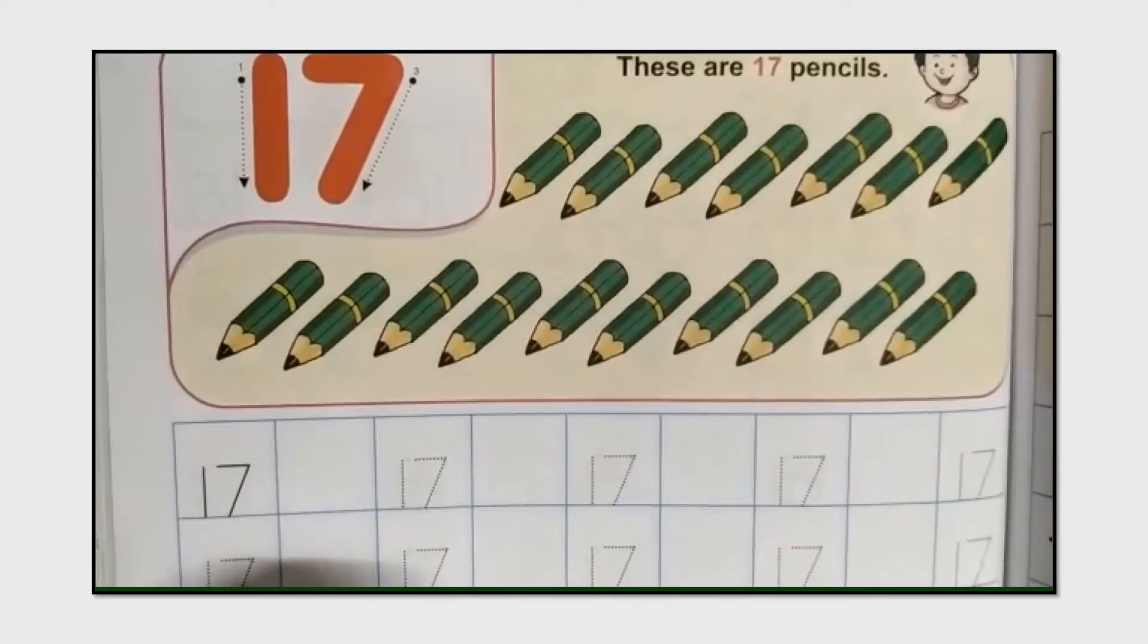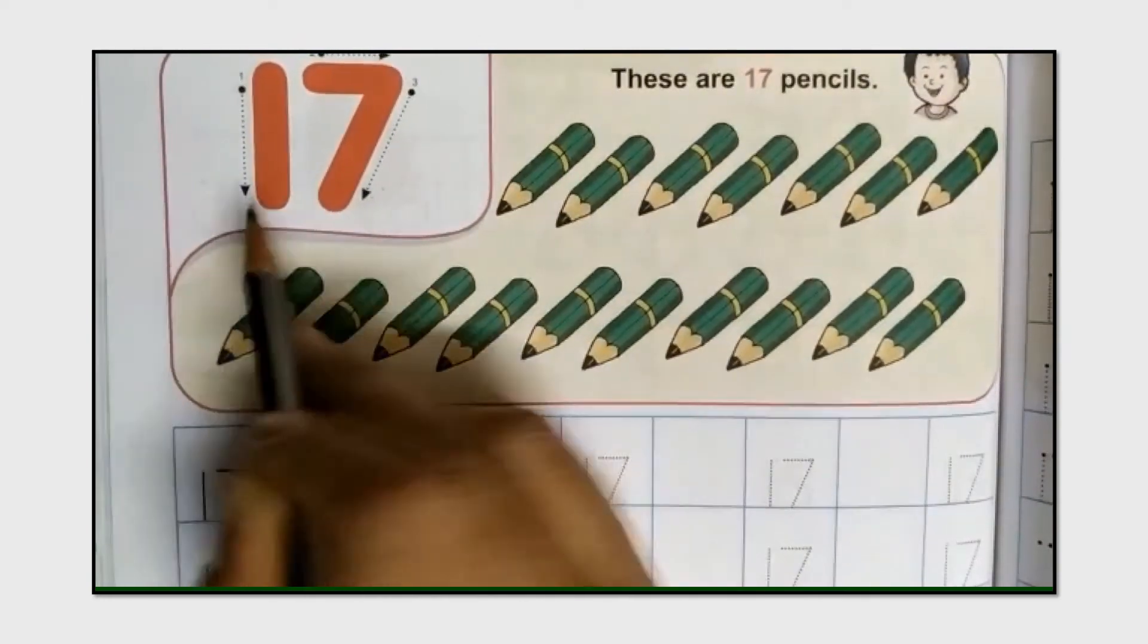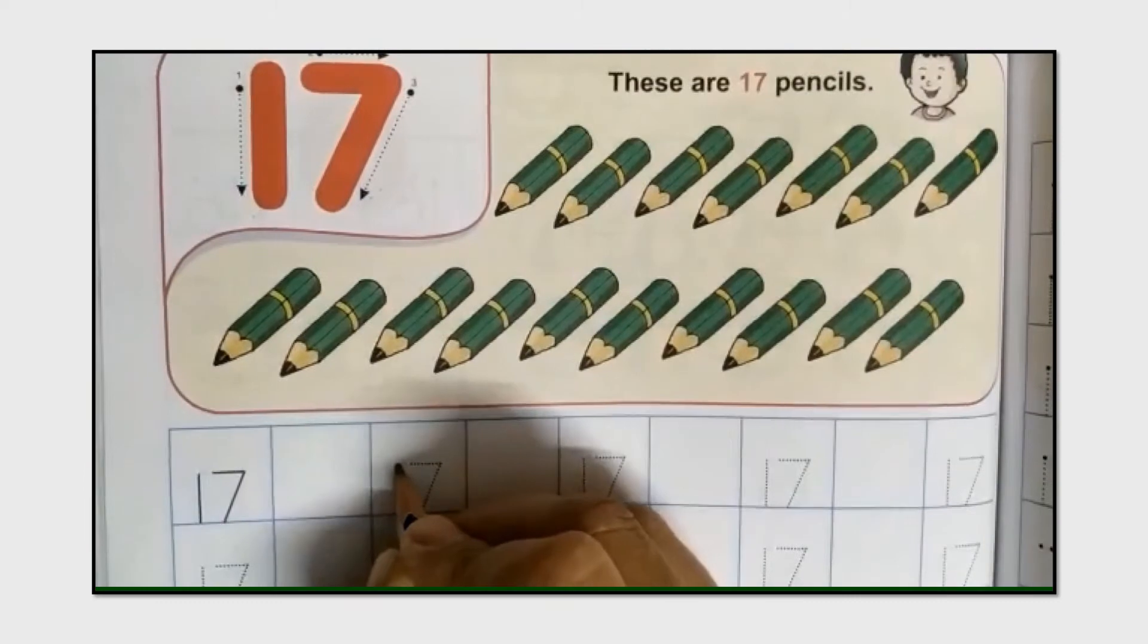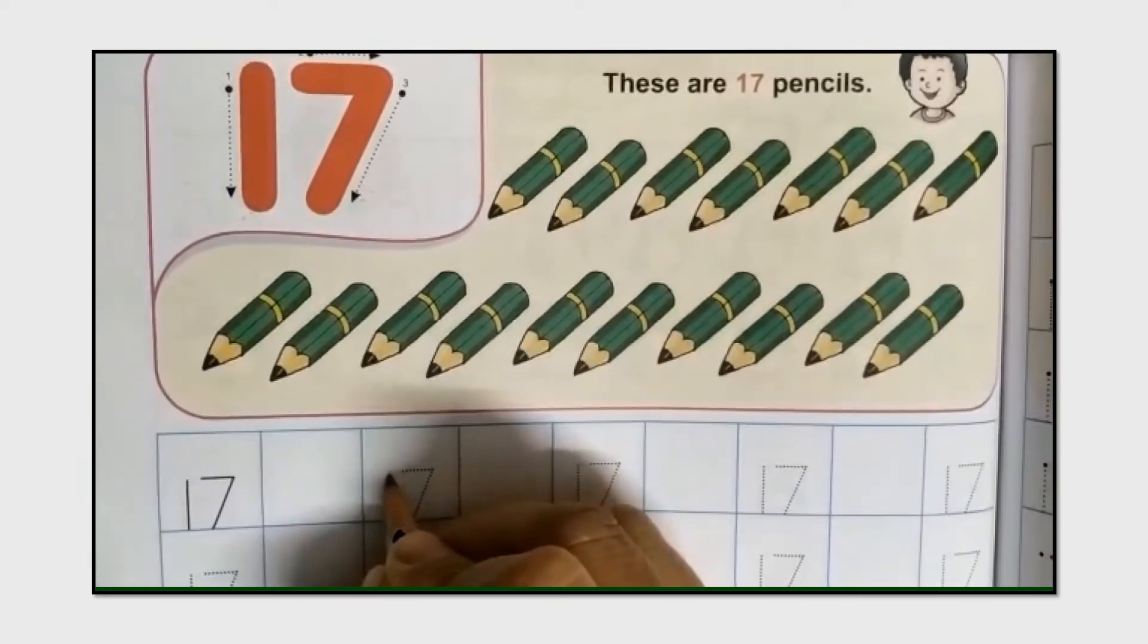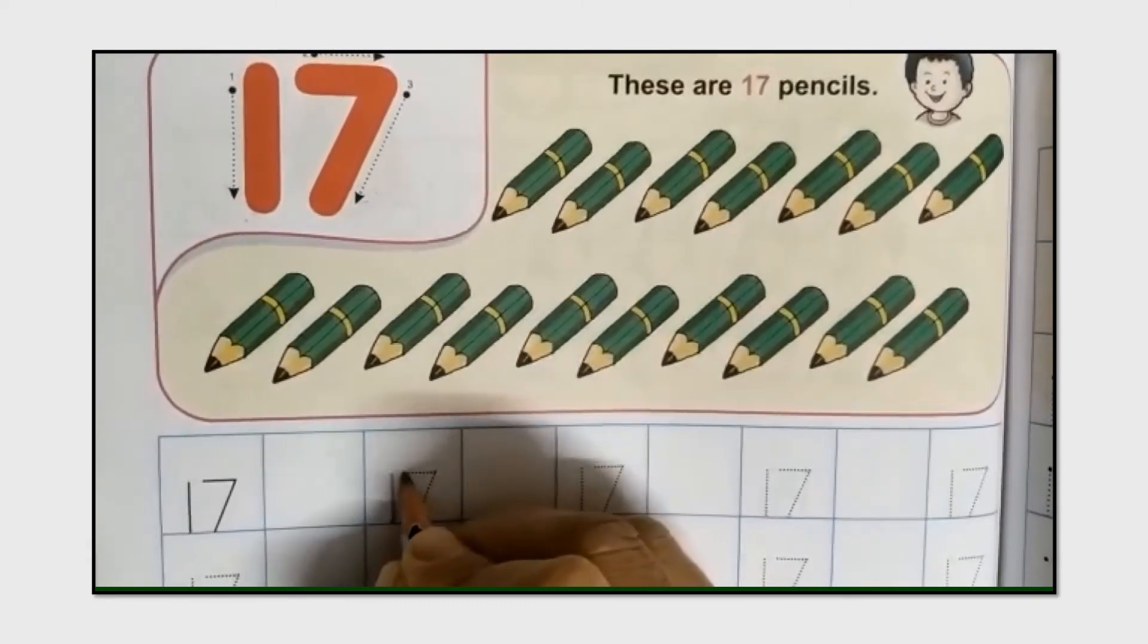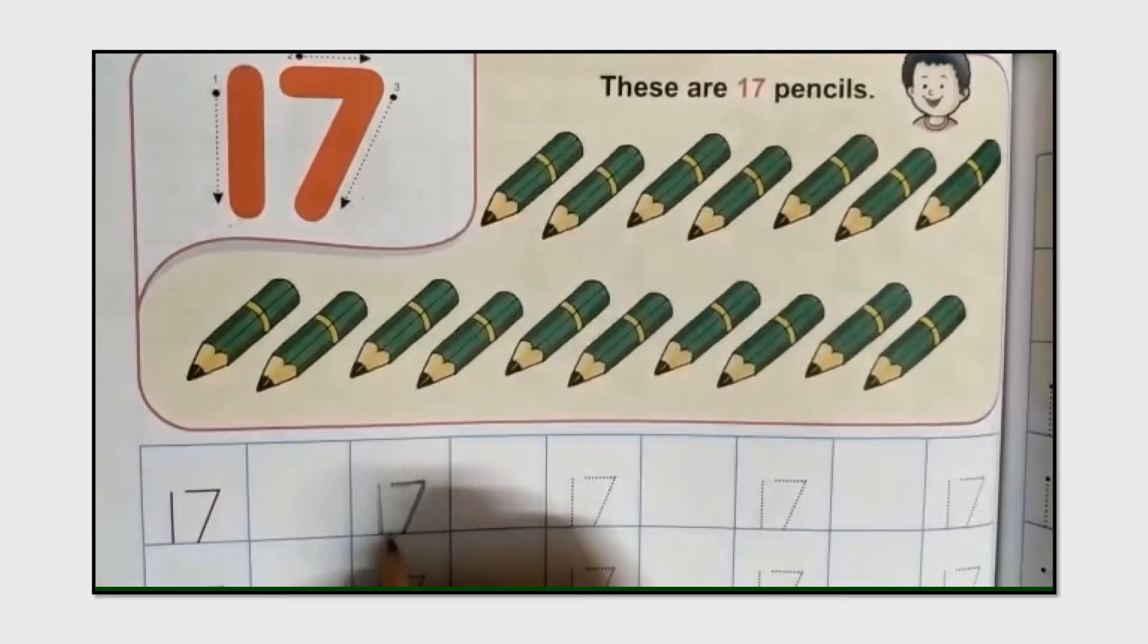Now children, we will learn how to write number 17. So, first we join the dots and make number 17. So, first of all, we will write number 1, and then number 7. So, this is number 17.